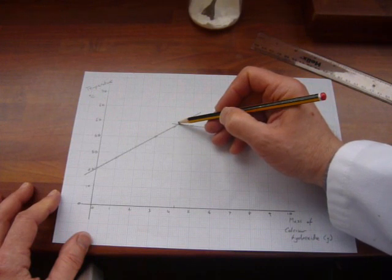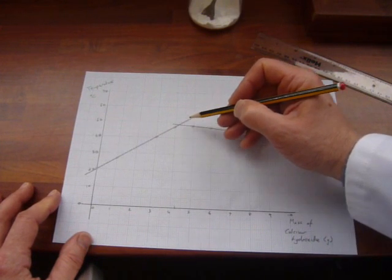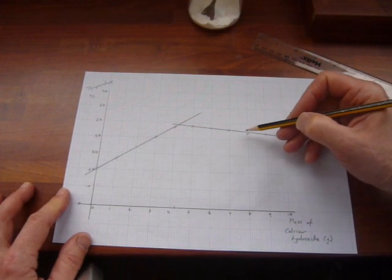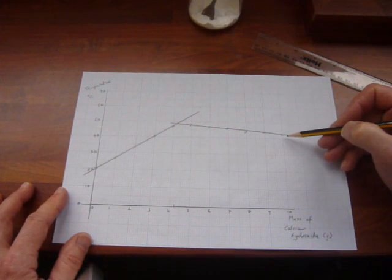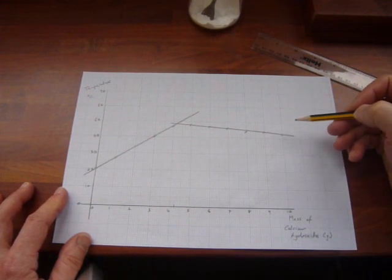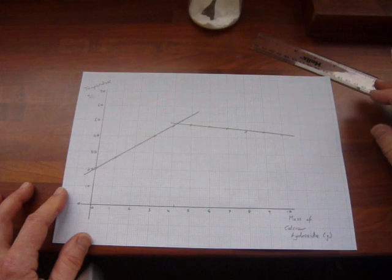This gave off the most heat energy, so the temperature rise was highest. Above that point, all we're doing is adding extra calcium hydroxide that has nothing to react with. And because it's got nothing to react with, it's not going to raise the temperature of the reaction mixture.